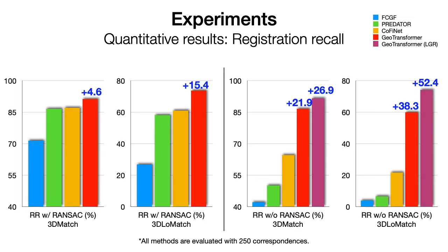For the registration recall, GeoTransformer surpasses previous methods by a large margin with RANSAC, especially on low overlap scenes. When RANSAC is not used, most previous methods fail, but our method still performs well thanks to the high quality correspondences. And GeoTransformer achieves very close results to RANSAC when using our local to global registration.